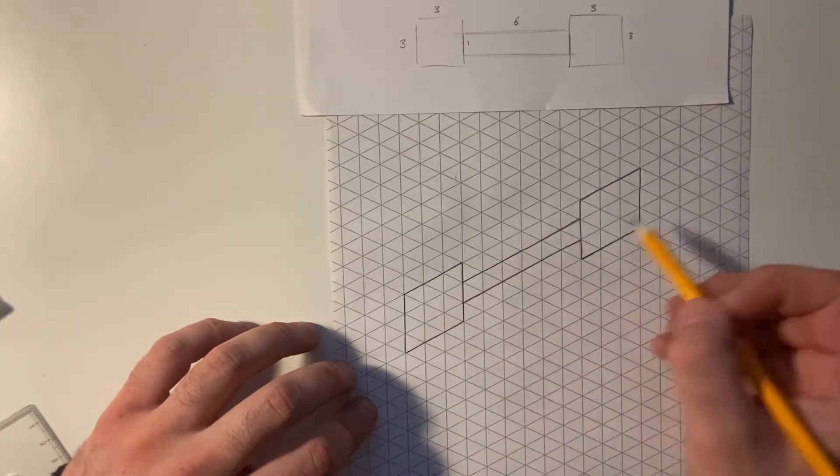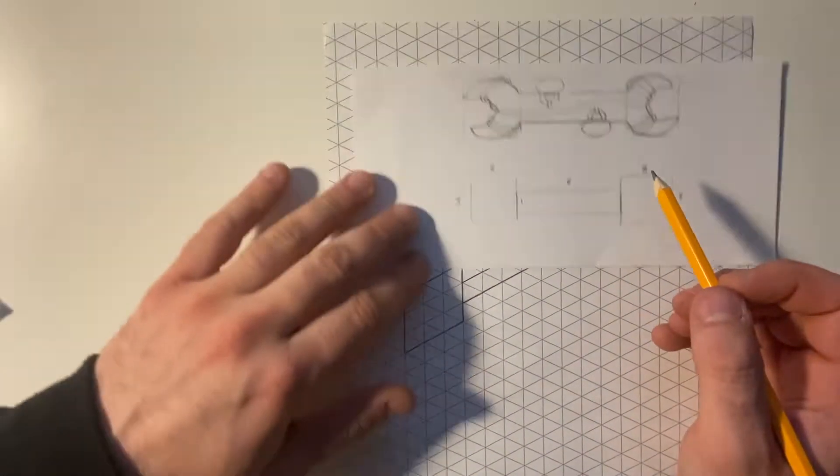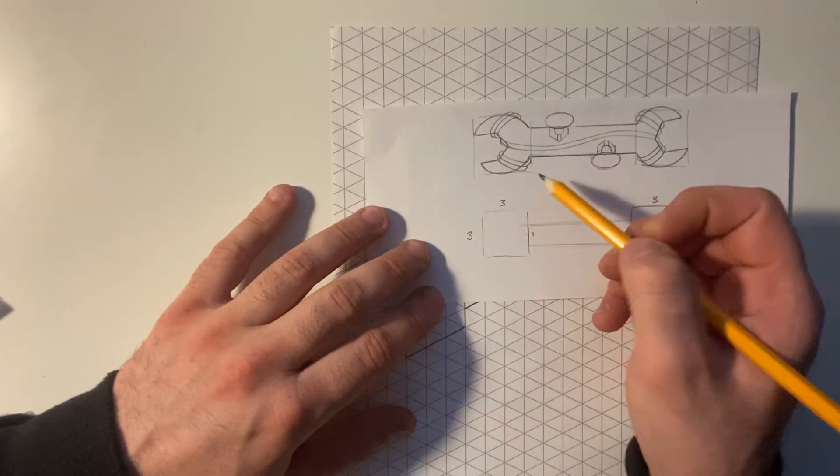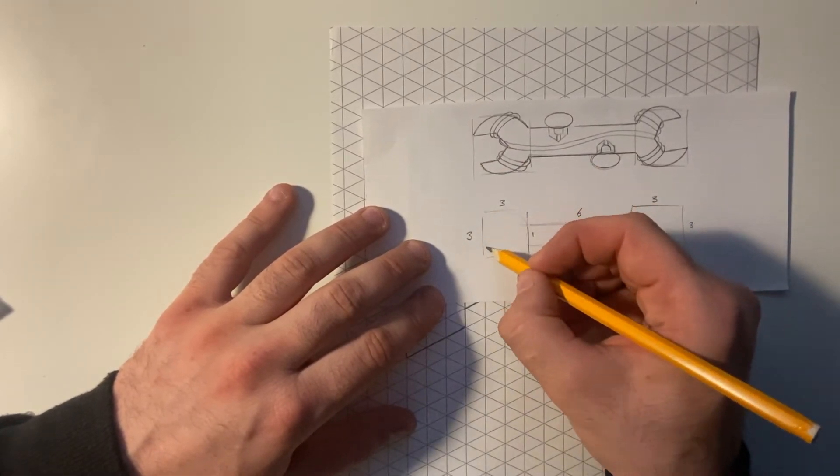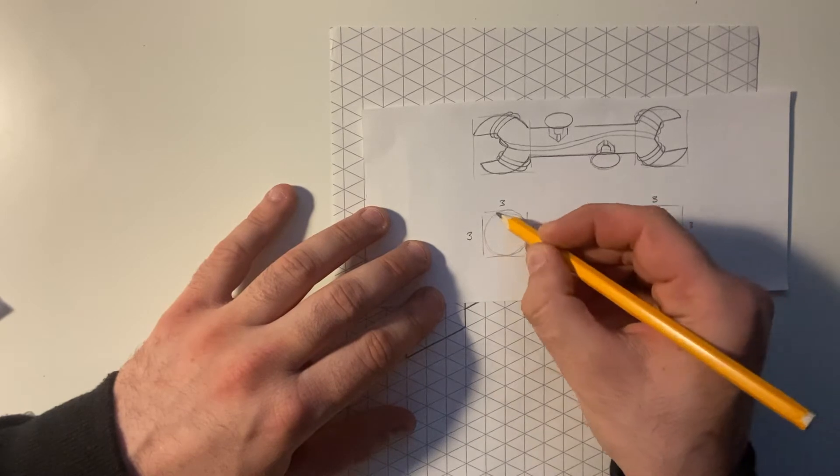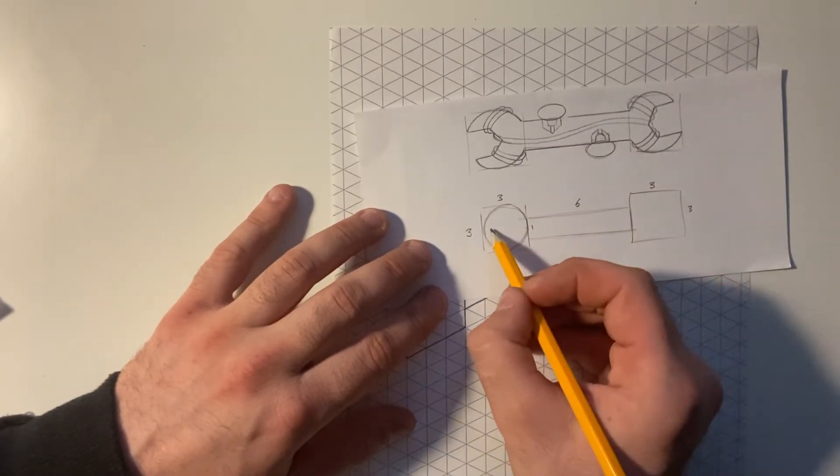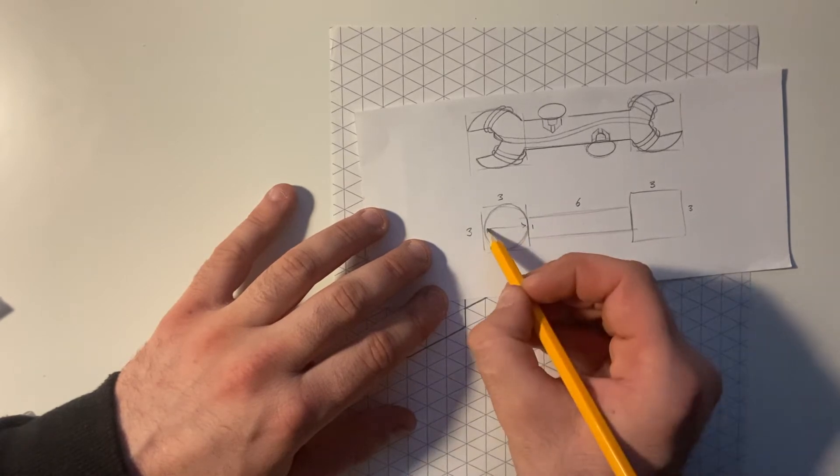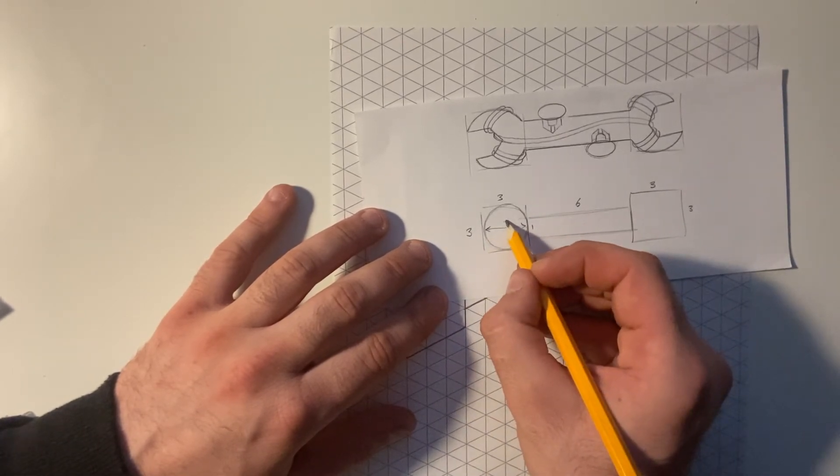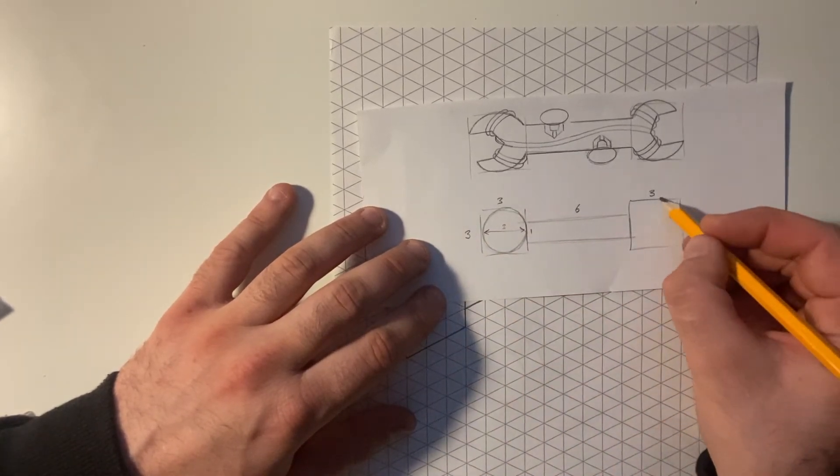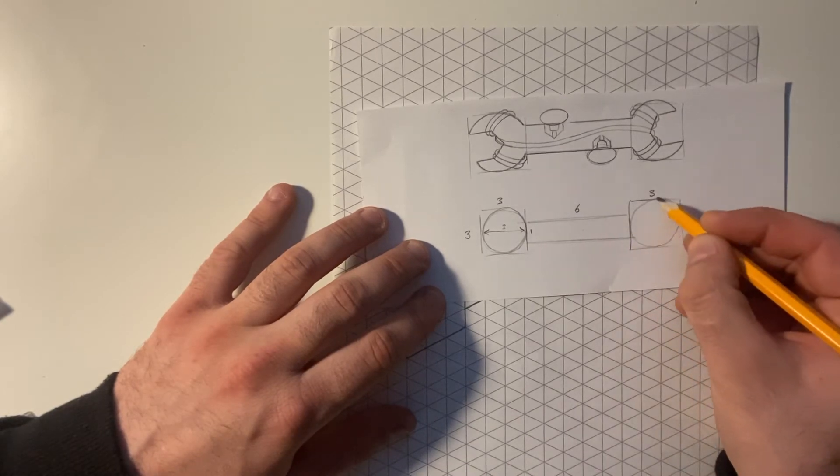So from this point, I can now begin to plan out these circular ends. OK, so if I imagine there's a circle within that 3 by 3 box, given my span, my diameter of my circle being 3. And the same on the opposite end.